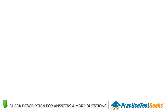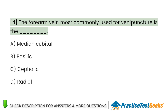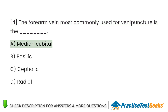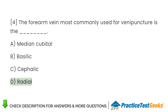The forearm vein most commonly used for venipuncture is the A. Median cubital. B. Basilic. C. Cephalic. D. Radial.